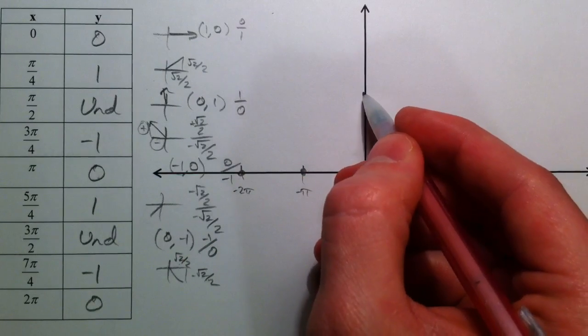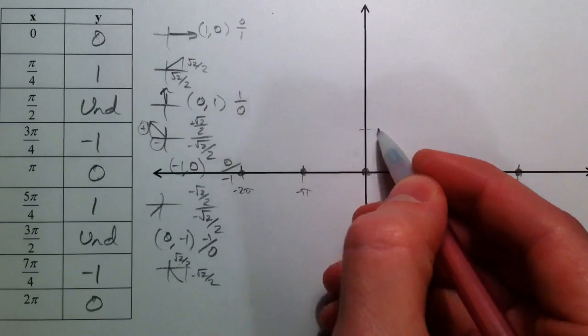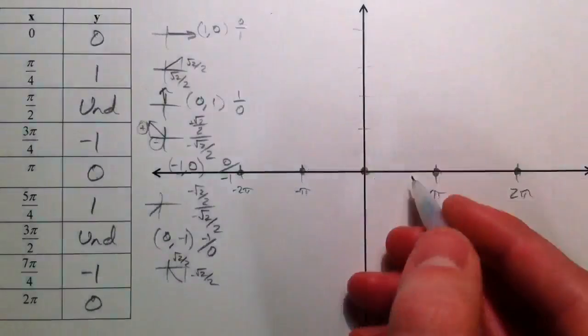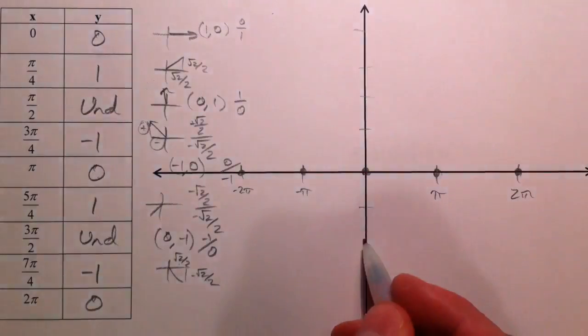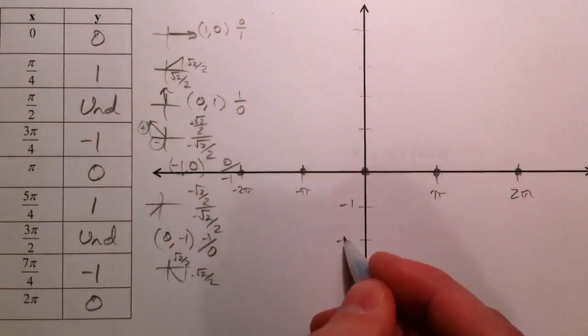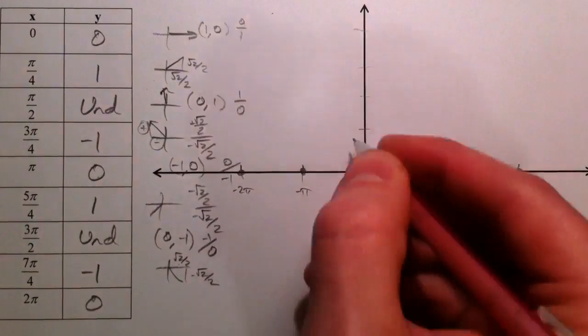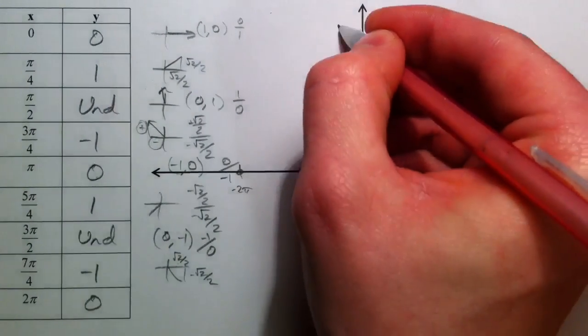Let's get 1, 2, 3, 4, negative 1, negative 2, negative 3, and on the other side 1, 2, 3.